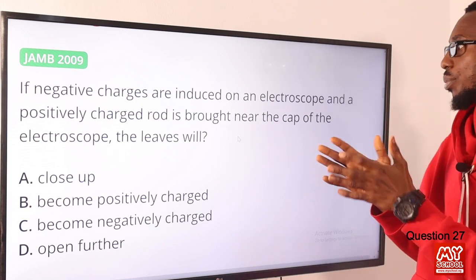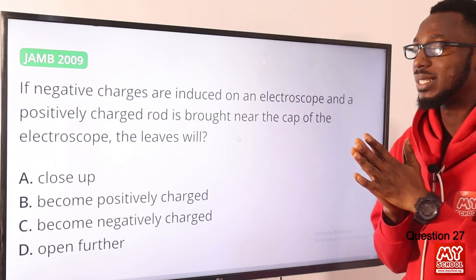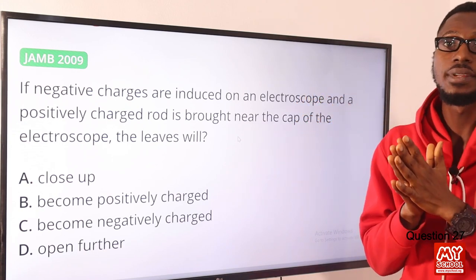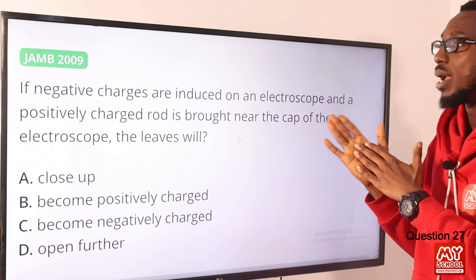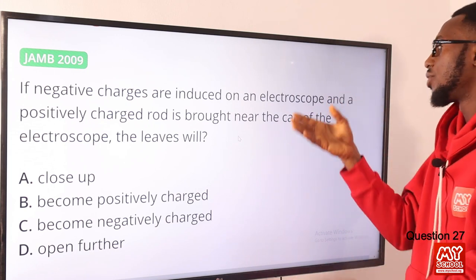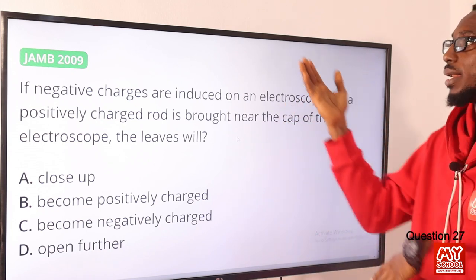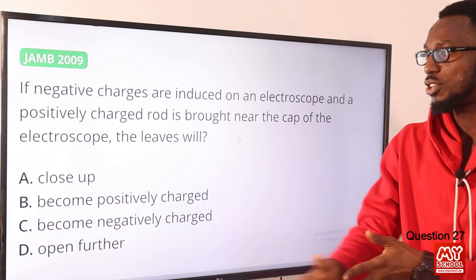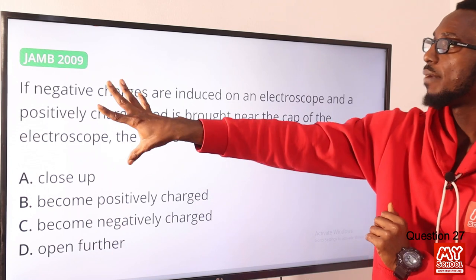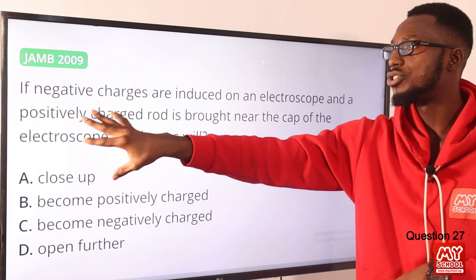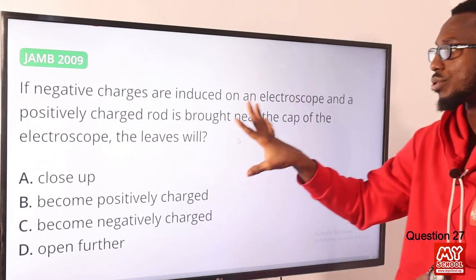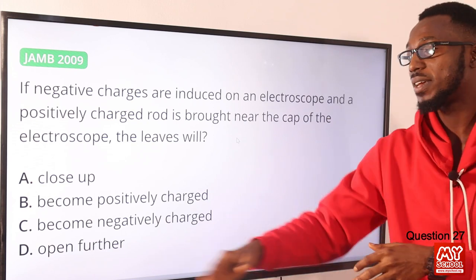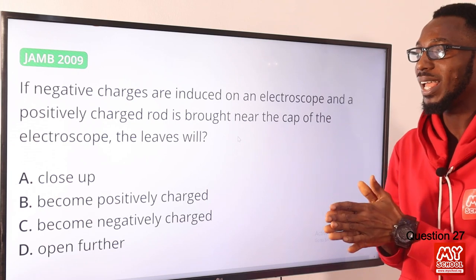When a negatively charged rod is brought to a negatively charged electroscope, divergence increases. The same applies to a positive rod and positive electroscope — divergence increases. But when a negatively charged rod is brought to a positively charged electroscope (or vice versa — opposite charges), divergence decreases. Since negative charges are induced on the electroscope and a positively charged rod is brought near, the leaves will close up, meaning divergence decreases. Option A (close up) is the correct option.